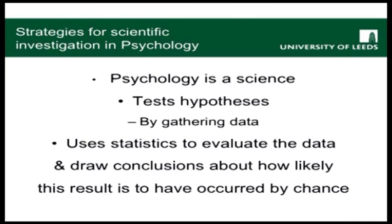Once we've collected our data, we want to use statistics to evaluate the data and to draw conclusions about how likely it is that the result that we've found could have occurred by chance. In this case, with androgens and aggression, we'd be looking for a correlation between those two variables. In other words, we want to find out the probability of finding this outcome and how likely it is that it occurred by chance.